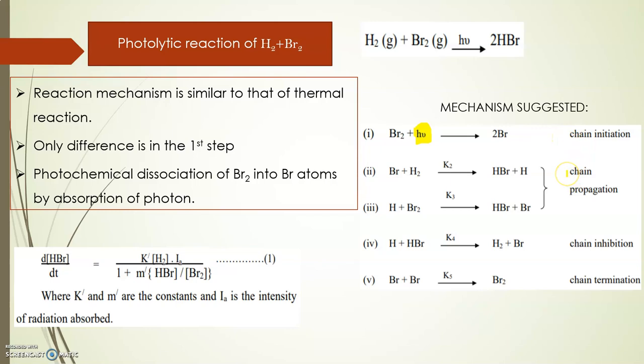Chain propagation continues where the atoms generated further add to the molecule and propagate to give different products. The next step is the chain inhibition where the chain stops, and finally chain termination where all the atoms recombine to give molecules.